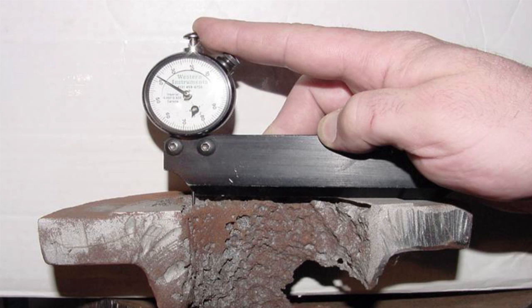Pit depth gauges are used to measure pit depth from one side. The results are compared to the original thickness of the steel to determine if sufficient thickness remains.